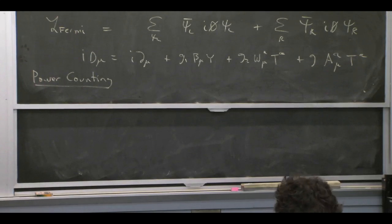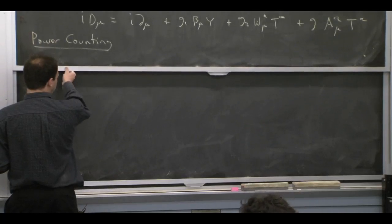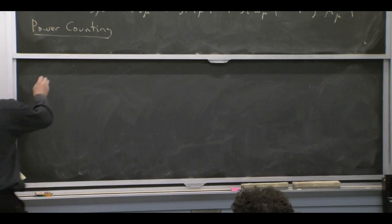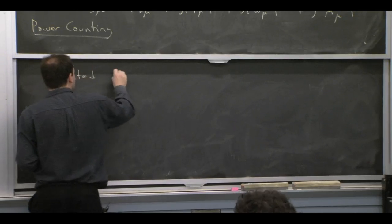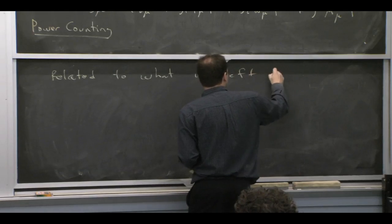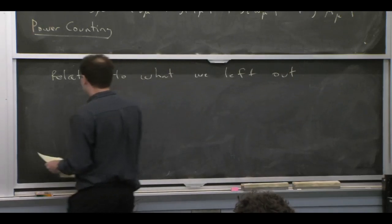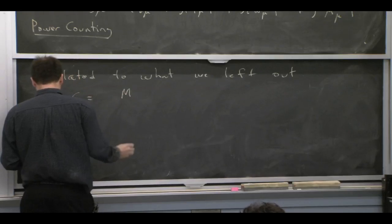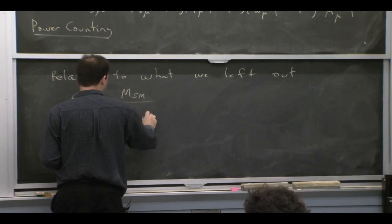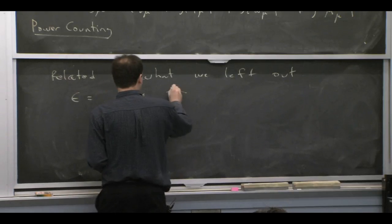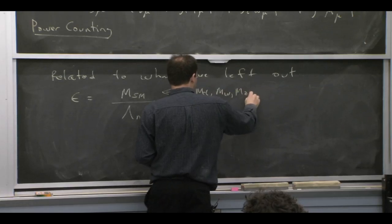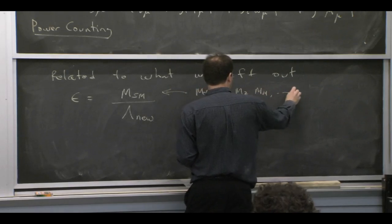What is it that we would do a power counting in here? So the power counting in this bottom-up approach is related to what we left out. So we're expanding an epsilon here, where epsilon is mass scales in the standard model divided by things that we've left out of our description. So in the numerator would be things like the top quark mass, the W mass, Z mass, Higgs mass, all the mass scales of the standard model.